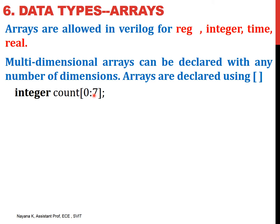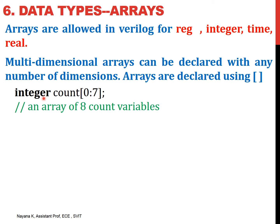Unlike vectors where we declare the MSB first and the LSB next, here we declare the lower index first and the last index. So from 0 to 7, we have totally eight elements. This declares an array named count with eight elements, and each element of this array is of type integer — meaning it can hold positive numbers, negative numbers, and integer numbers.